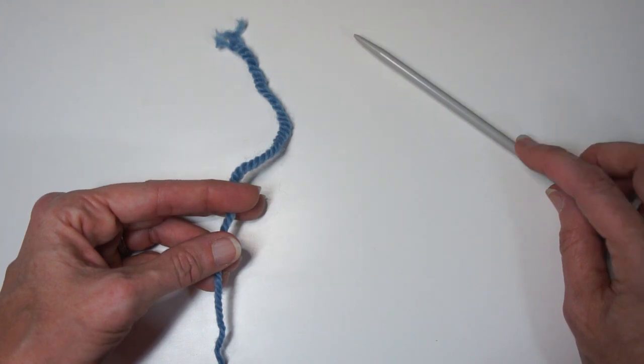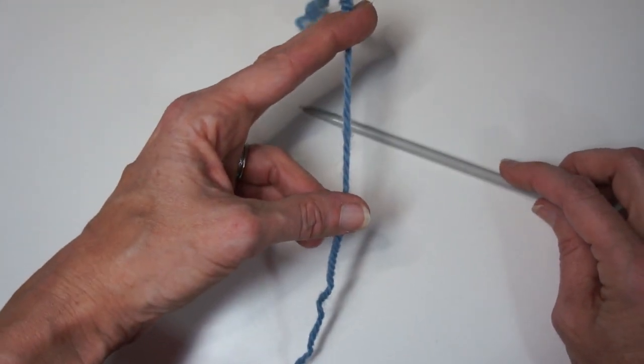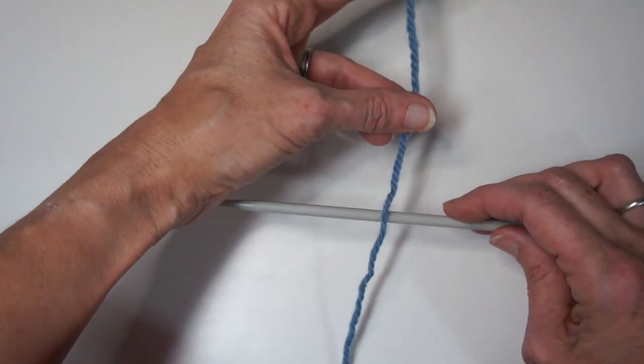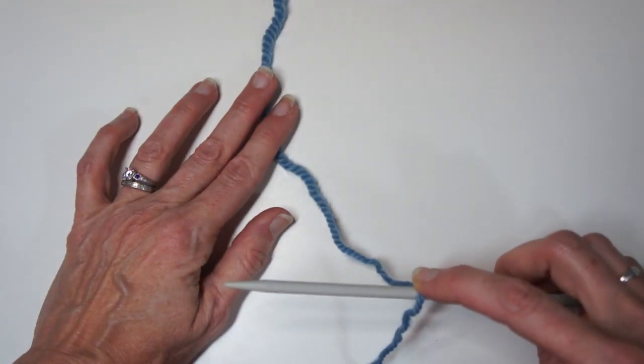This is a quick tutorial on long tail cast on in slingshot position. Since it's the basis of so many other cast ons, it's a great one to learn.